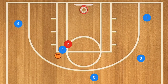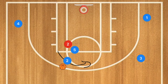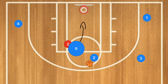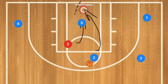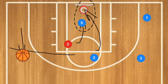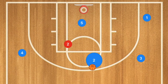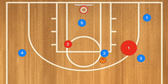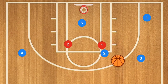Once player five passes to player two, player five goes and sets a screen for player two. Player two uses that screen and player five rolls towards the basket. Player two could take that shot, or pass to player five cutting towards the basket. Player four also goes up to the free throw line extended and player two can pass to player four for a three-point shot. Another option: if player three's man drops down to player two, player two could pass out to player three for the three-point shot.